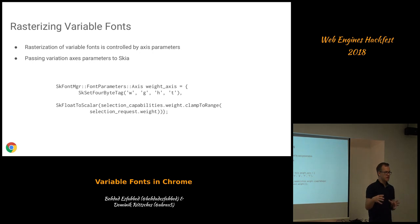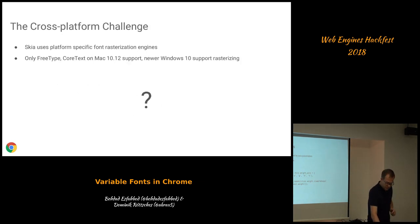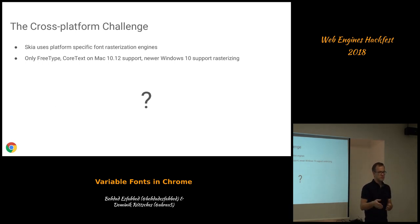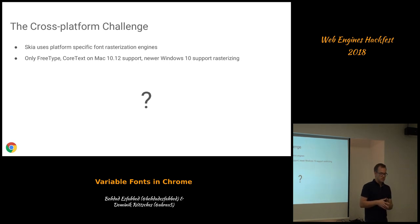Skia uses several backends, so we need to run Chrome on macOS, Chrome OS, Linux, Android, and Windows. On each platform we need to find support for variable fonts — this is the cross-platform challenge. Variable fonts are fully implemented in FreeType, and we have FreeType on Linux, Chrome OS, and Android. But on Windows we are using DirectWrite through Skia, and on macOS we are using CoreText also through Skia.